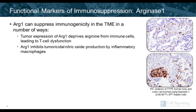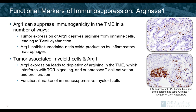Moving on to Arginase-1, it can be expressed by tumor and myeloid cells and can lead to immunosuppressive conditions within the tumor microenvironment. Tumor expression of Arginase-1 can deprive immune cells of arginine, leading to T cell dysfunction. Arginase also inhibits tumor-derived nitric oxide production by inflammatory macrophages. Expression of arginase by immune cells within the TME can have similar immunosuppressive functions. In human lung carcinoma examples shown, arginase is mostly expressed by immune cells with no expression on tumor cells.